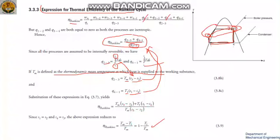We rearrange because (s3 minus s2) and (s1 minus s4) are equal from the diagram. s3 equals s4 and s1 equals s2, so they are equal.